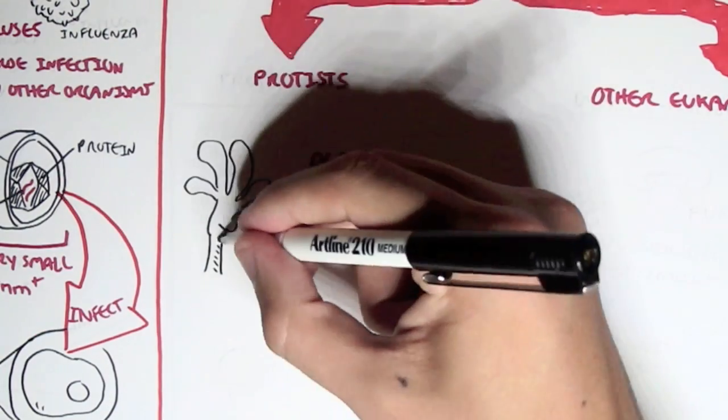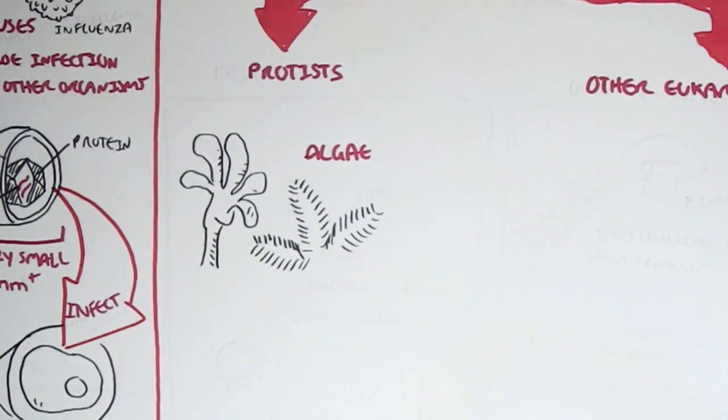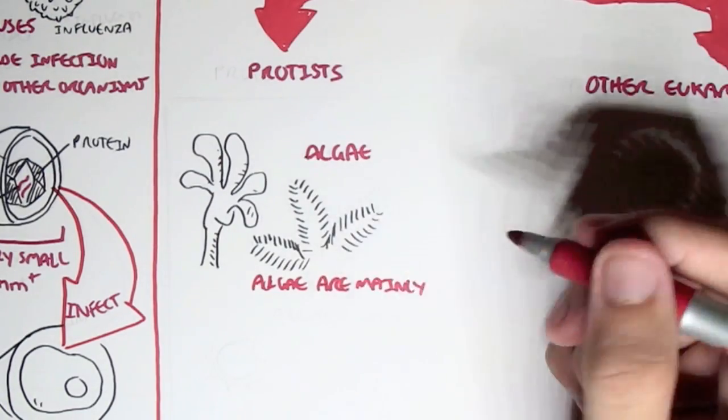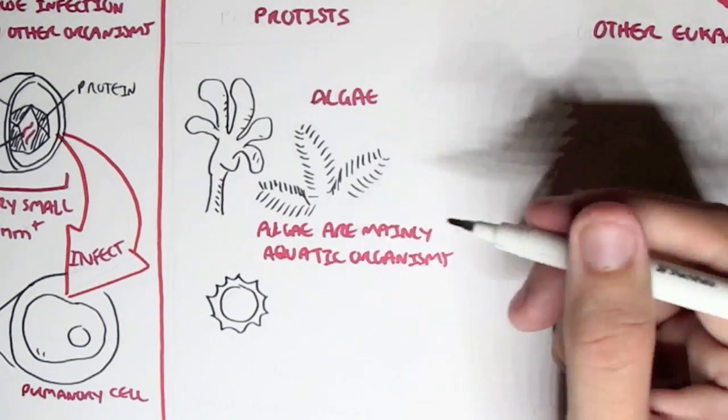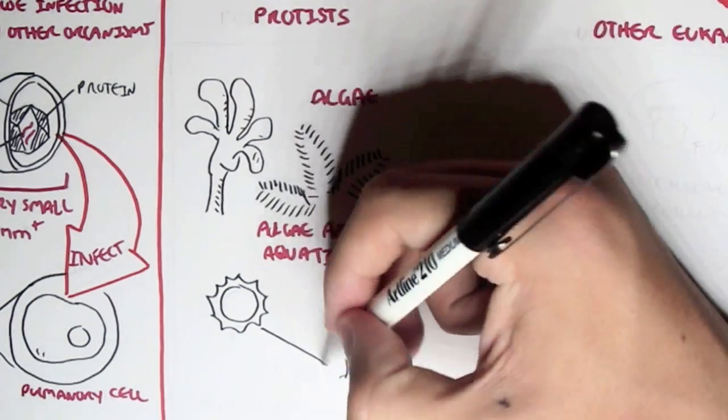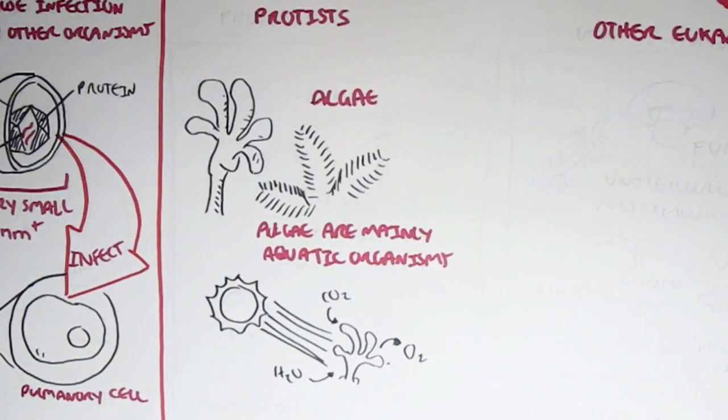And the algae are mainly aquatic organisms. And you can see them in the sea, such as seaweed. This is a type of algae. And they actually can absorb sunlight and carry out photosynthesis. So most algae carry out photosynthesis. They absorb carbon dioxide, sunlight, water, and they produce oxygen for humans.